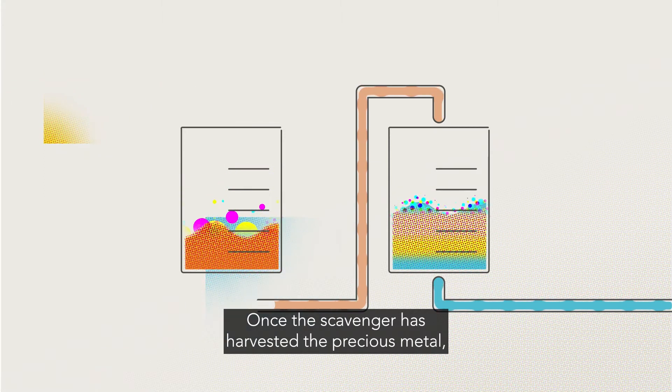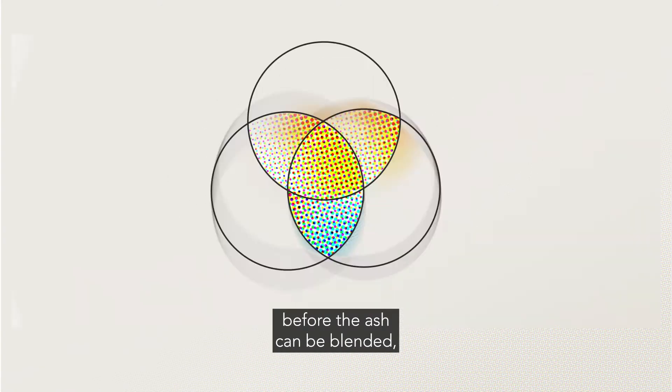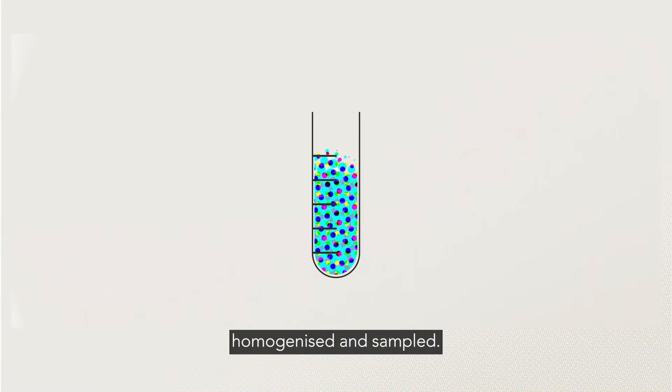Once the scavenger has harvested the precious metal, it will undergo controlled thermal treatments before the ash can be blended, homogenized and sampled.